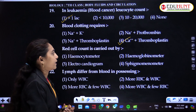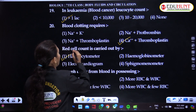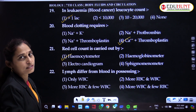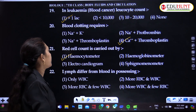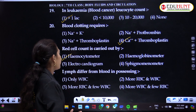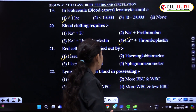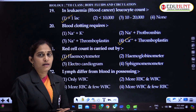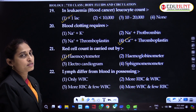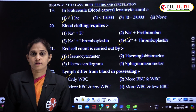Red cell count is carried out by a hemocytometer, which is used to determine the RBC count. Lymph differs from blood in possessing only WBC — lymph contains only WBC.